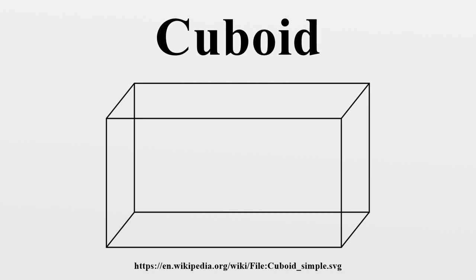This more restrictive type of cuboid is also known as a rectangular cuboid, right cuboid, rectangular box, rectangular hexahedron, right rectangular prism, or rectangular parallelopiped.